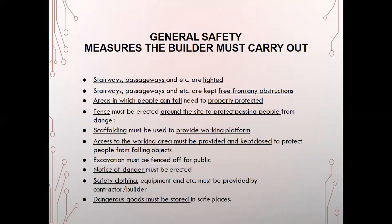General safety measures the builder must carry out include: stairways and passages should be lighted and free from obstructions; areas where people can fall must be properly protected; a fence should be around the site to protect passing people; scaffolding must be used to provide working platforms; access to the working area must be provided and kept clear; excavations must be fenced off from the public; notices of danger must be put up; safety clothing should be given to the contractor and builder; and dangerous goods must be stored in safe places.